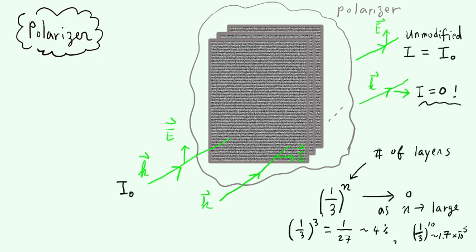So that's the basic principle of a polarizer. Now we ask an important question: what if the electric field is neither horizontal nor vertical? What if the electric field is in some direction making an angle alpha with respect to the vertical axis? What happens then?